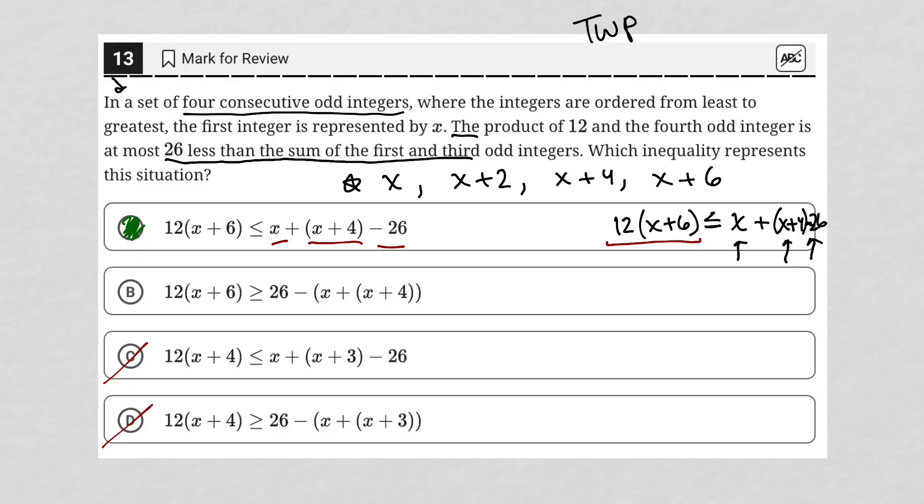Choice B looks like we have the sum of the first and third odd integers, but we're subtracting that from 26. And that's not exactly what we want to do. So anytime we see a number less than something, it means we're starting off with the something first and then removing 26. If I have 26 less dollars than you have, we must first start off by knowing how much you have, then subtract 26. It wouldn't be 26 minus what you have, if that makes sense.